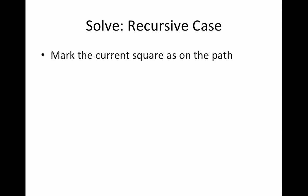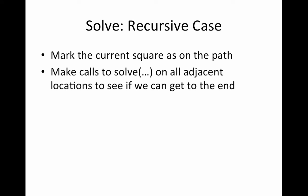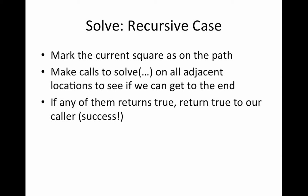What are the recursive cases? We already said that we are going to mark the current square as on the path, as if it is on the path that leads outside of the maze. And then we are going to call recursively solve on all the adjacent locations to see if we can get to the end from any of our neighbors. If any of them returns true, then our recursive method is going to return true to our caller. There was success. We found the end of the maze through this particular row, column location.